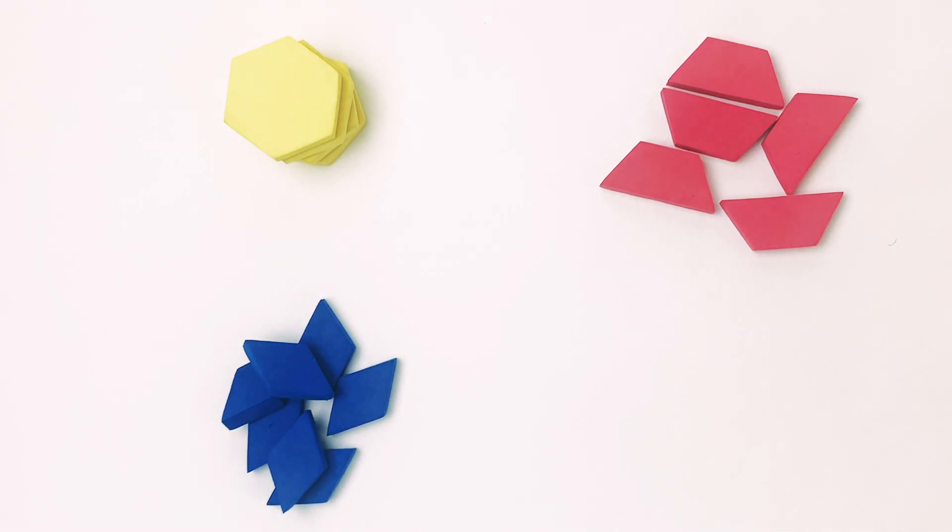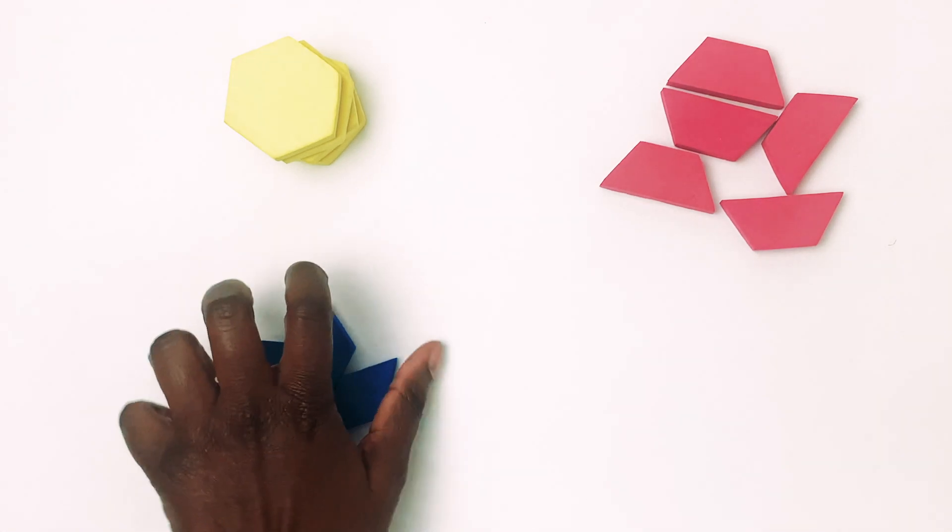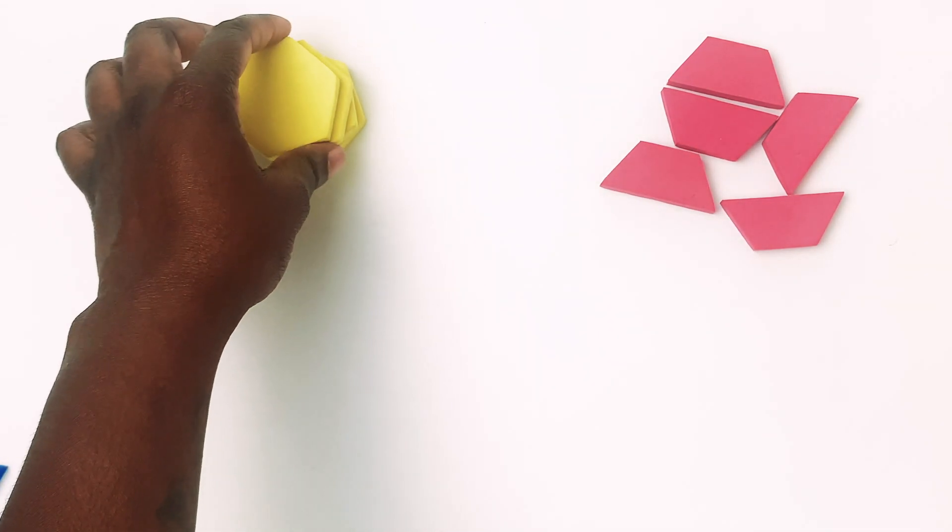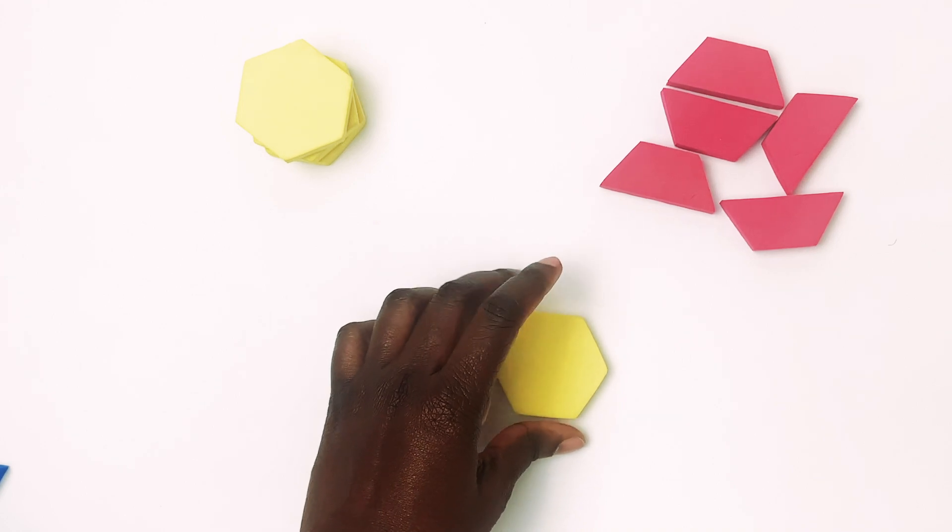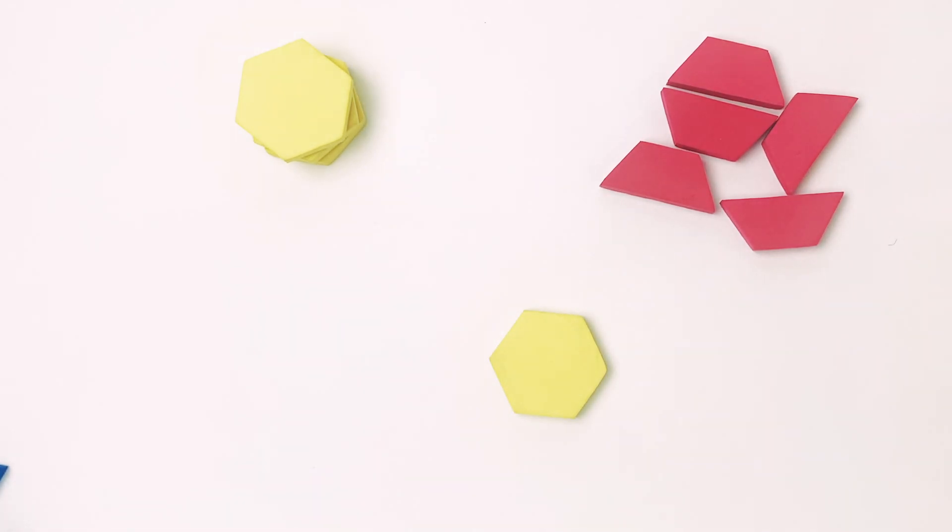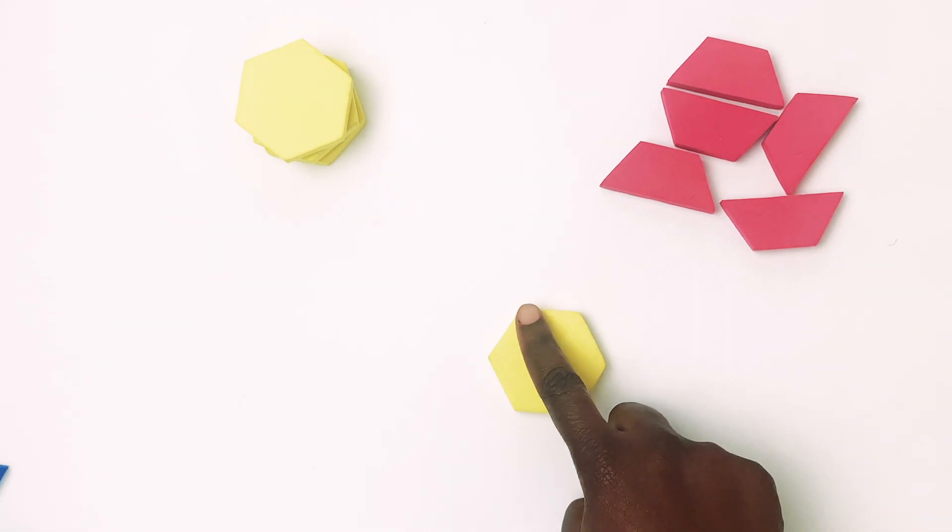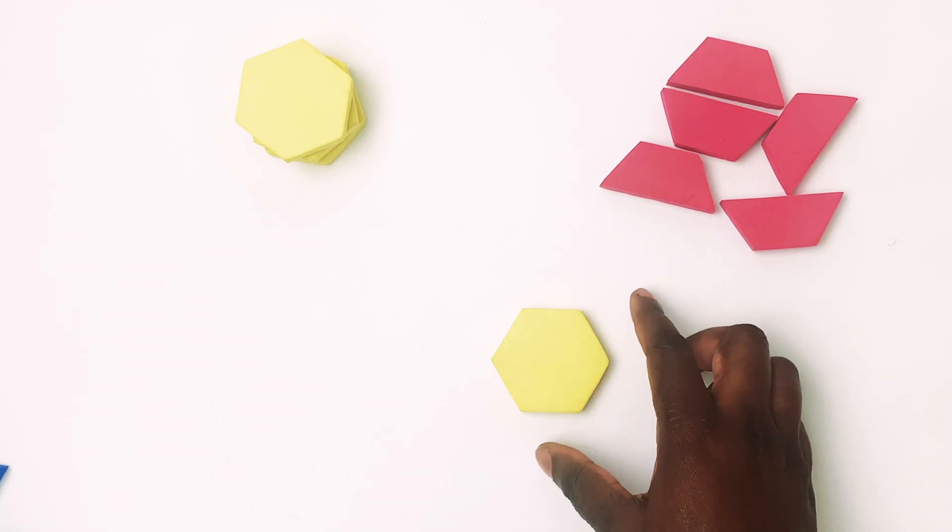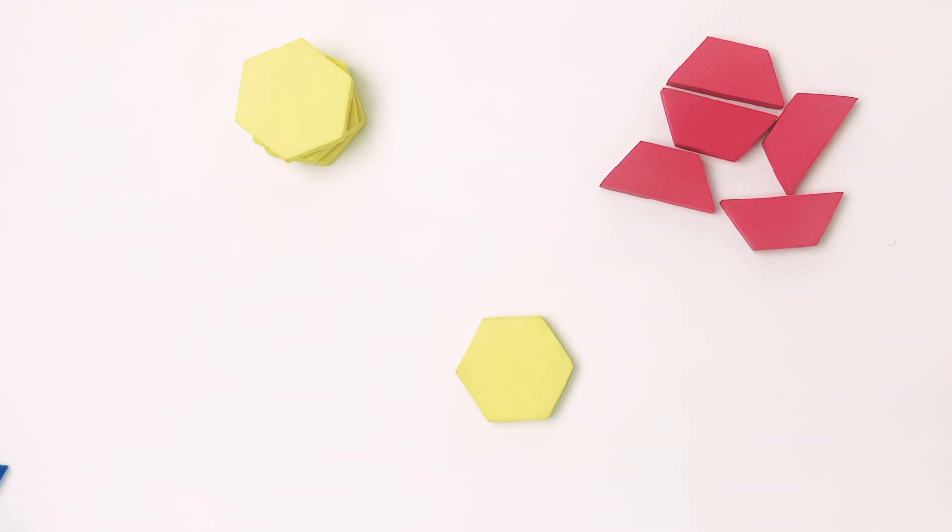First we're going to use the trapezoids to see how many trapezoids we can use to create a hexagon. Now, a hexagon is a shape that has six sides. Let's count the sides. One, two, three, four, five, six. A hexagon has six sides.